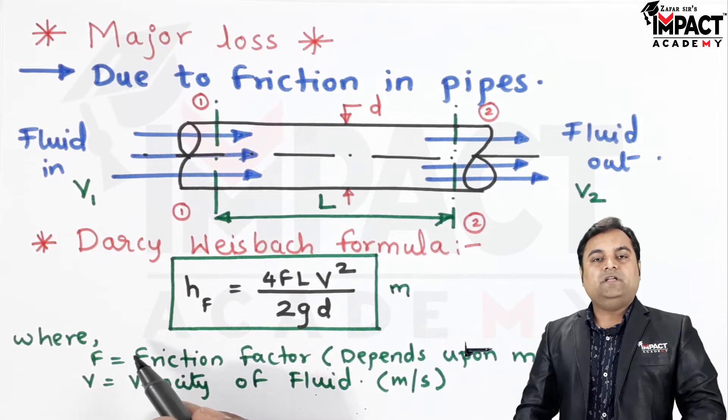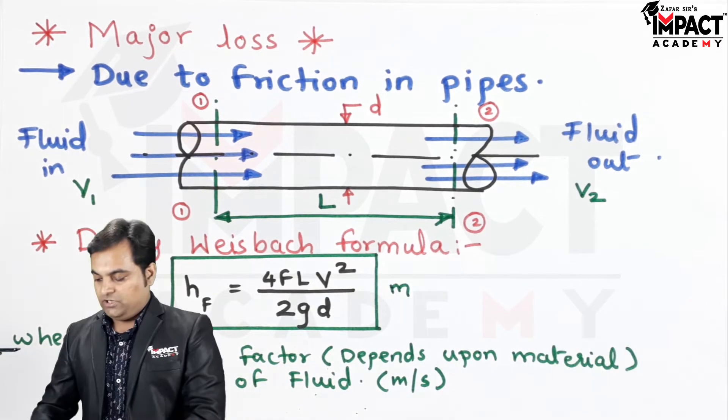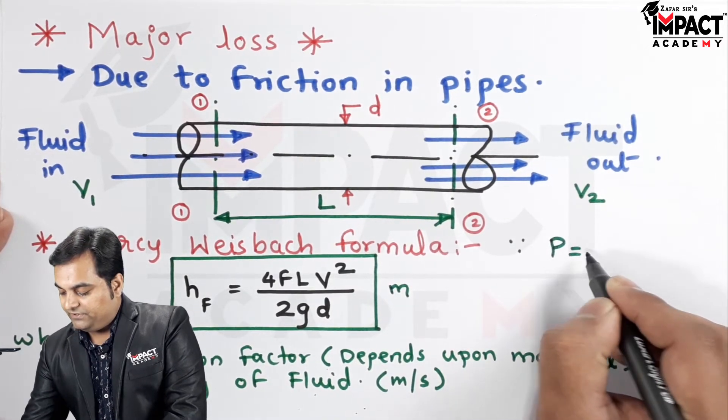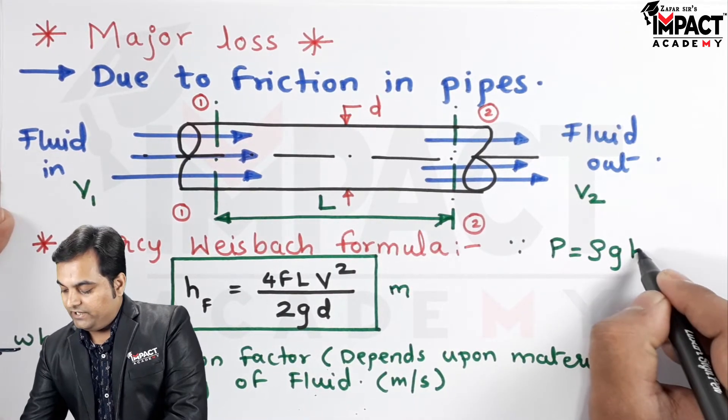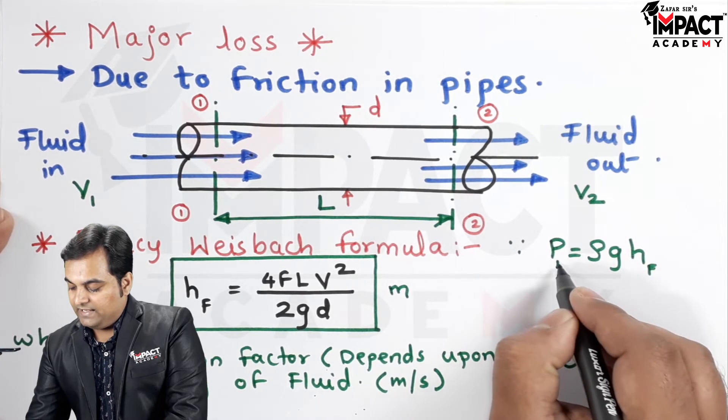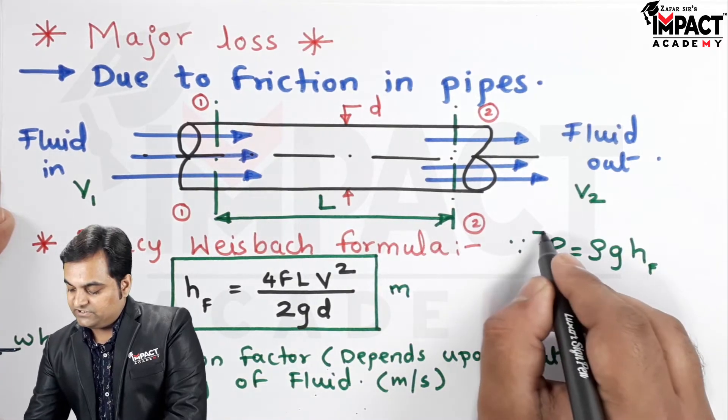Once we know HF, then we can calculate how much amount of pressure intensity is lost by using the formula that since the pressure intensity is given by rho g into H. And since here we have HF, so I am writing this F and the pressure which is lost due to friction would be P suffix F.